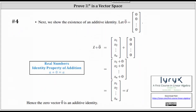Number four: we show the existence of the additive identity. We let the zero vector be the column matrix with n zero entries. Considering vector x plus the zero vector, adding the corresponding elements and simplifying, we get vector x, showing vector x plus the zero vector equals vector x. Hence the zero vector is an additive identity.